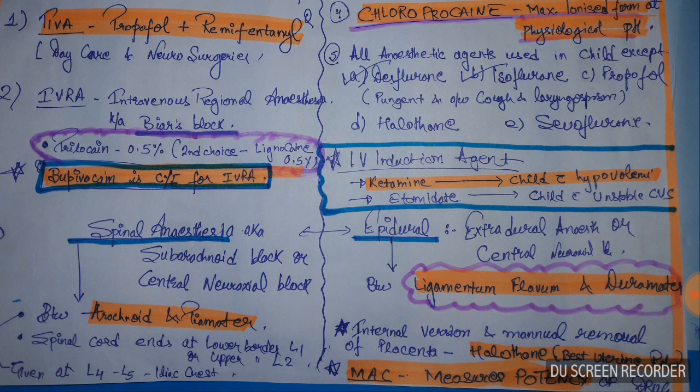Etomidate is the agent of choice in a child with unstable CVS (cardiovascular system). They may ask this via a clinical scenario involving manual removal of placenta and internal version — in that case, halothane is the anesthesia of choice, and it is the best uterine relaxant.